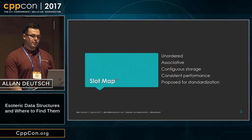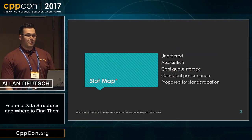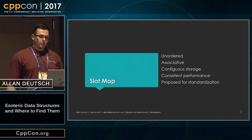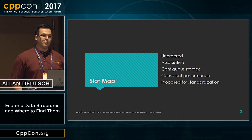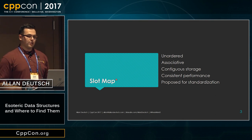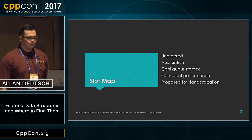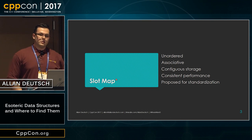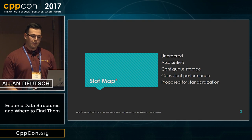The first data structure we're going to talk about is slot map. Slot map is an unordered container, which means that your data, regardless of the order you put it in, may not be in the same order later on. It's associative, so when you insert something, you're going to get a key to find it later. It stores all of the elements in contiguous memory with no gaps, which gives it great performance for iteration.